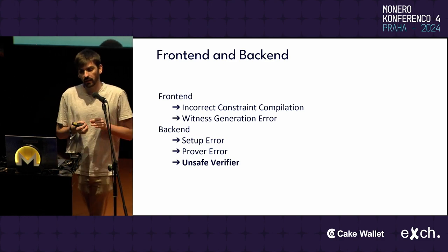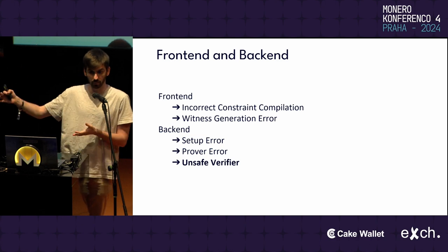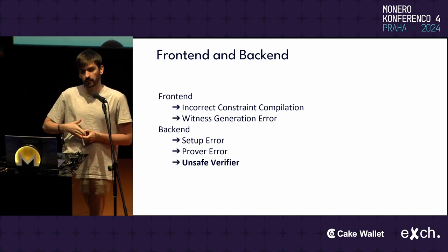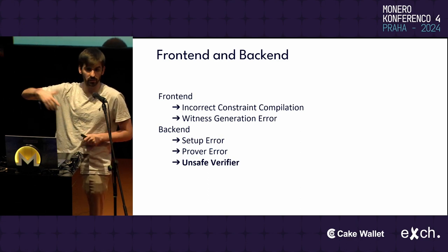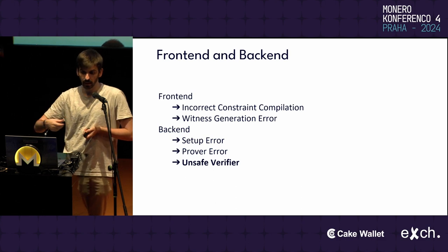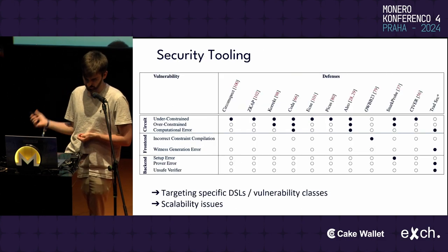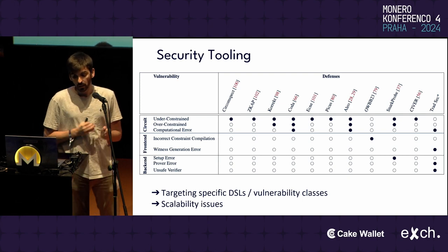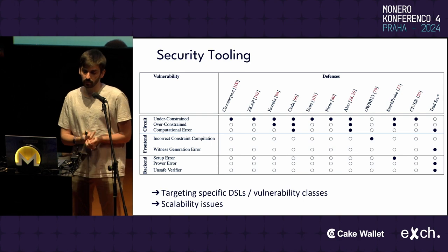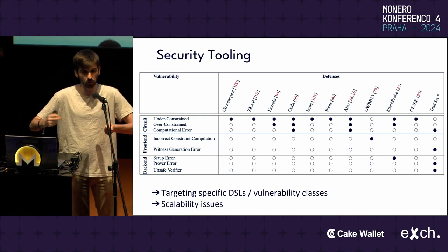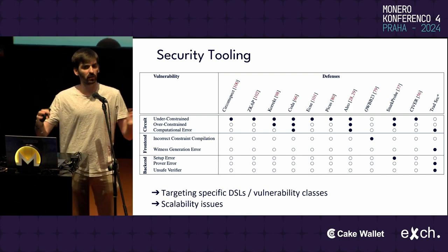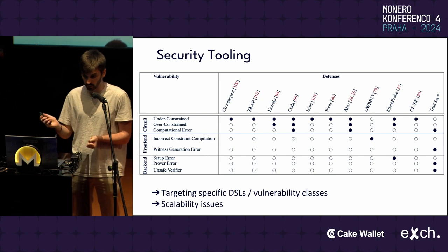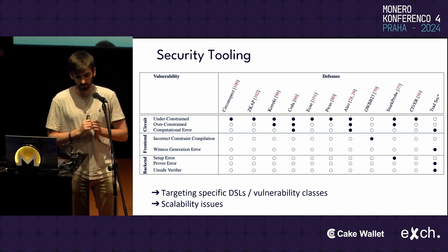On the frontend and backend, there are a number of vulnerabilities detailed in the paper. The key point is that even if our circuit is correct, a frontend vulnerability could still allow an exploit — and the same applies to backend vulnerabilities. People have tried to create security tools to detect these vulnerabilities, mainly focused on the circuit layer, but because of the complexity of these systems and the large number of DSLs, the results are not great — many vulnerabilities cannot be detected, and for some DSLs there is basically no security tool support. There has also been no effort on the frontend and backend layers.